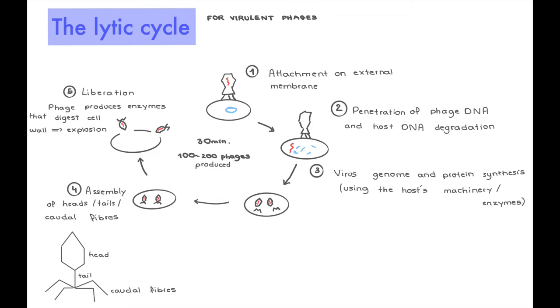Step four is the assembly of the heads, tails, and tail fibers. Since it's maybe not obvious for you, I've drawn a little diagram underneath of what each body part means for a bacteriophage. And step five is liberation. So the phage is going to produce enzymes that digest the cell wall, and this leads to the explosion, and unfortunately, death of the bacteria cell. And all these little phages are going to escape into the environment and repeat this process with a new bacteria cell. This whole cycle takes about 30 minutes, and 100 to 200 phages can be produced. So I imagine each of those 200 phages goes to attack a new cell, producing another 200 phages. It's hence why viruses can spread so quickly.